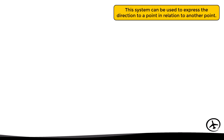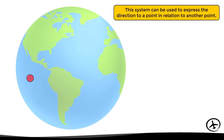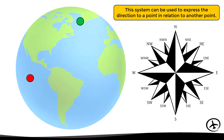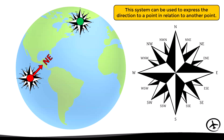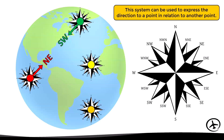This system can be used to express the direction to a point in relation to another point. For example, if we want to express the relative direction from the red point to the green point, we can say that the green point is to the northeast of the red point. Conversely, the red point is to the southwest of the green point. Similarly, for someone at the orange point, the yellow point is to the north, while for someone at the yellow point, the orange point is to the south.